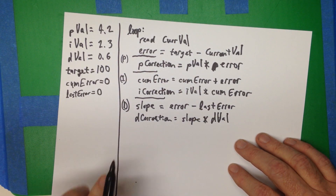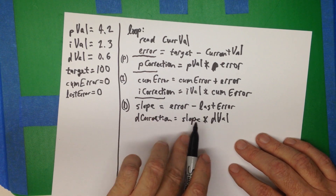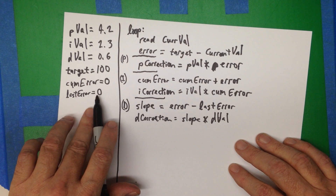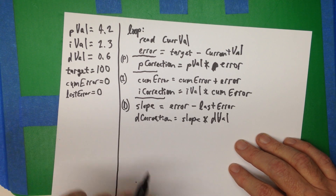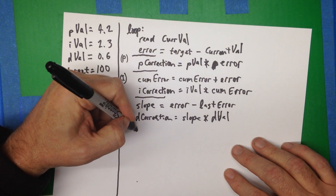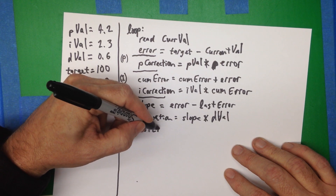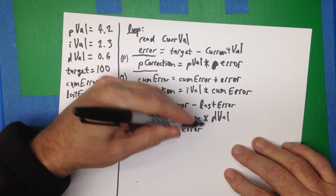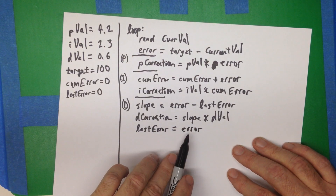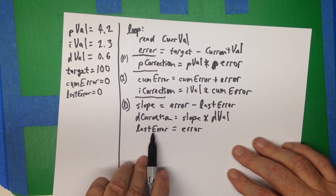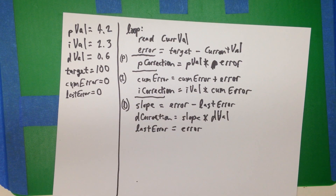Note that this doesn't quite work the very first time through because last error is zero, but almost instantaneously on the second pass through the loop it will work, so we can just ignore that. We also need to save off: last error equals error — so that the next time through the loop we'll have the current error as the last error in the context of the next iteration.